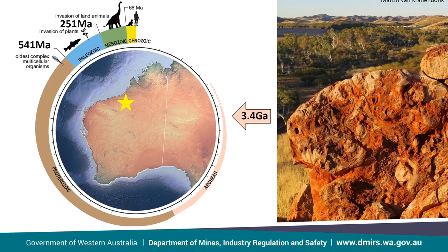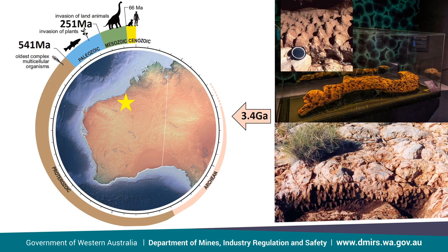For our next stop we move to the slightly younger Strelly Pool Formation, also in the Pilbara region of WA. Sites here and those of the Dresser Formation are protected geoheritage reserves administered by the Geological Survey of Western Australia; access requires an application through our department. The reason these sites are protected is that as well as being some of the oldest evidence of life on our planet, they are also some of the best documented. This site is known as the Trendle Reserve, first discovered by former GSWA Director Alec Trendle. A number of different stromatolite forms occur here, including a small conical stromatolite known as the Egg Carton stromatolite, which is now the centrepiece of the stromatolite display in the Origins Gallery at Bularni Djup, the new WA Museum.